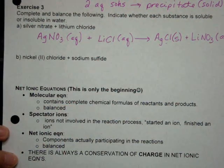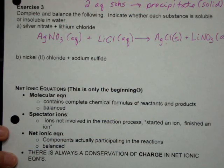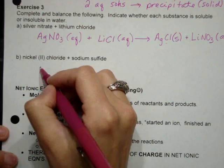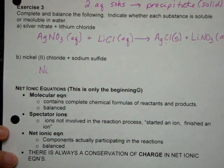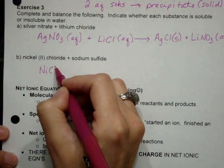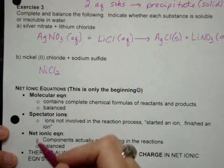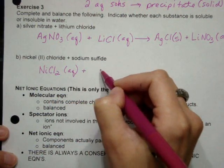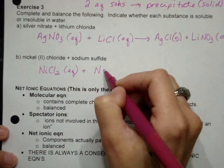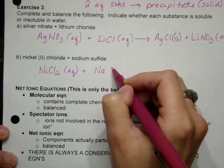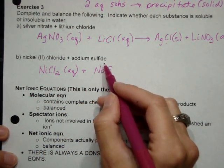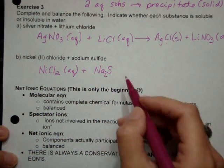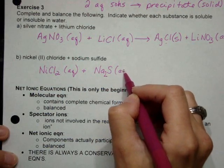For the nickel two chloride and sodium sulfide, we have essentially the same type of setup. I'll just write it out quickly. Nickel two tells me that the nickel is a plus two charge, and then the chloride is a minus one, so I'm going to need two chlorides. Again, it's aqueous unless I'm told otherwise. Then sodium sulfide. So we have Na, and sulfide is just the sulfur. Na is a plus one, sulfide is a minus two, so we need Na2S aqueous.